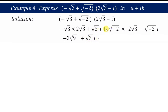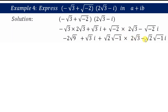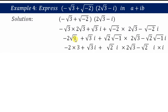Instead of writing √(-2), we split it as √2 · √(-1), so we can replace √(-1) with i. So √(-2) becomes √2·i. We then have: -√3 into 2√3, plus √3·i, plus √2·√(-1) into 2√3, minus √2·√(-1)·i. Here √(-1) is i, so -2 times √9 which is 3, plus √3·i, plus √2·i.